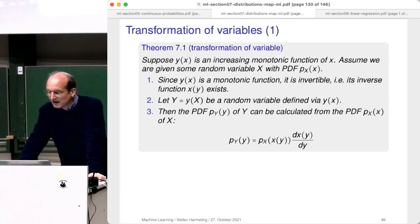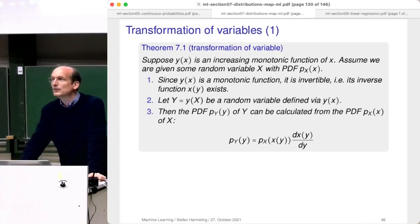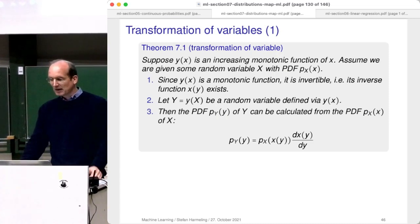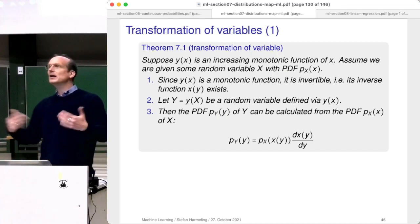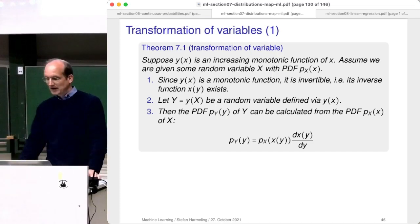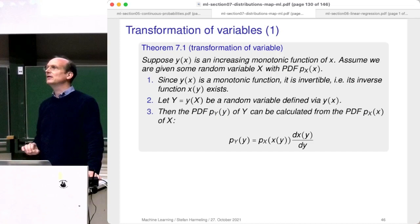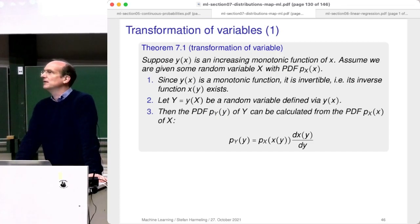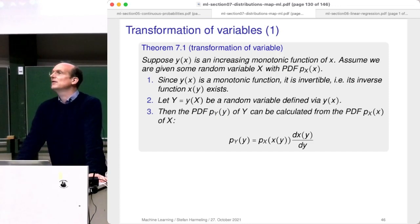The PDF of y — where we put a subscript y to be clear — is basically the density of x where we plug in x of y. The value y for which we want the density gets plugged into the inverse function, putting us back in the domain of x. However, that's not all — you need to rescale with the derivative of the inverse function. So this is just the derivative of the inverse function.